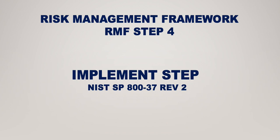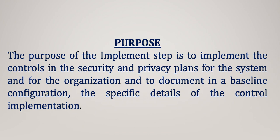The purpose of implementing controls on the system is to make sure that the system is adequately protected before it is deployed into production. The purpose of the Implement step is to implement the controls in the security and privacy plans for the system and for the organization, and to document in a baseline configuration the specific details of the control implementation — including the input, output, expected behavior, and expected output of how the control should function.